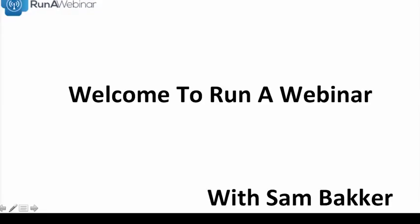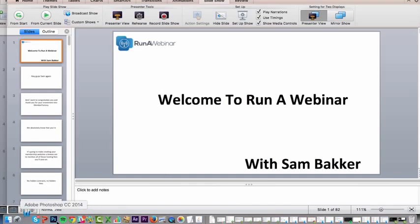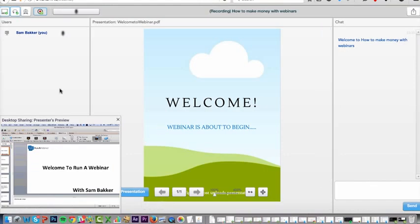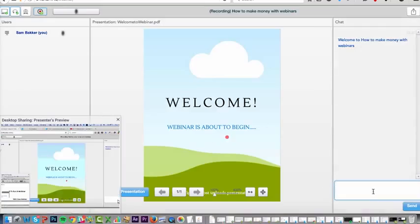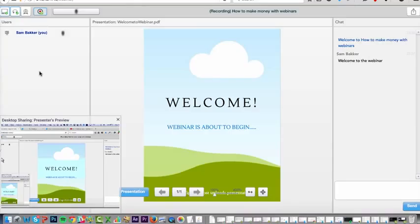This is what it looks like from my side — I've got my slide presentation here. If I get questions, I go back to the Firefox dashboard where I can see the chat and type messages like 'Welcome to the webinar.' People can see the webinar is happening as they join. I can see attendees listed, and if I click a button next to someone's name, I can make them the presenter. Chat questions here are private — shared only between me and that user.